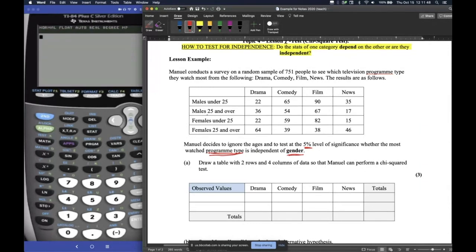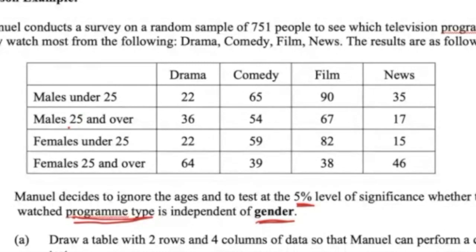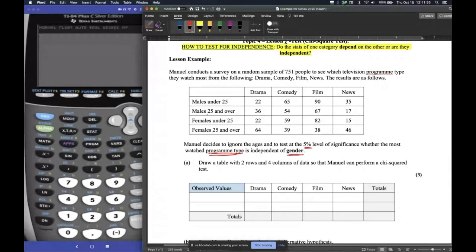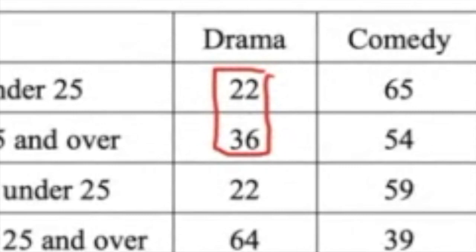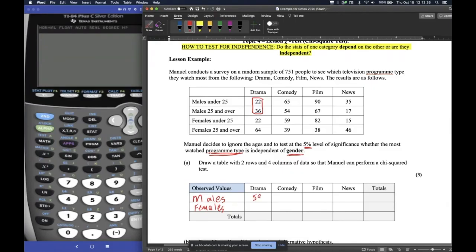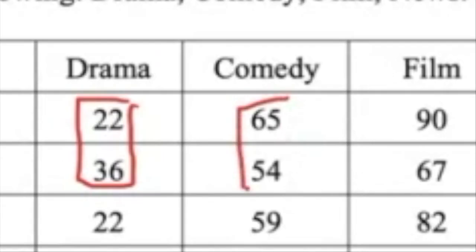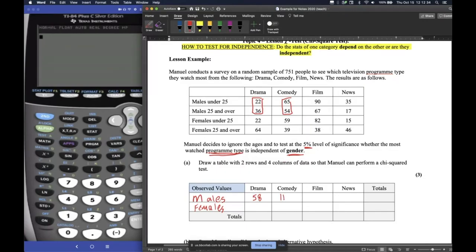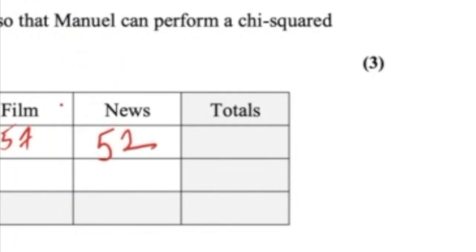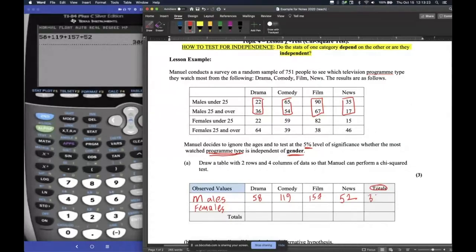So we know our significance level is 5, and he wants to see if the program type is independent of gender. Does it not matter? The first thing we need to do is draw a better table. This huge table we have here won't work because we have technically males and females in two different categories, so we want to combine them. On your table with me, you're just going to follow me. One is going to be males, and the other one is going to be females. And then we're just going to group them together. So males for drama would be this plus that, 58. So 58 dudes like drama. And then for comedy, we have 119 dudes. Film, 157 dudes. And then for news, we have these two, add them together, and you get 52.